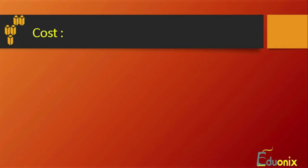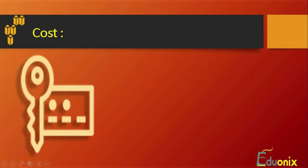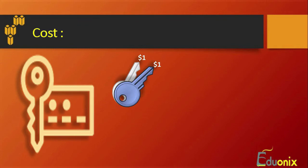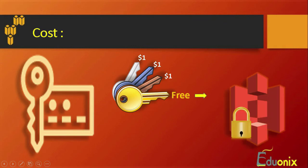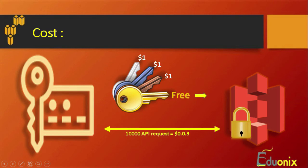Regarding the cost of KMS: each key you create costs one dollar. However, your first key is completely free. If you are using only one key, it is completely free. After that, 10,000 API requests are included, and beyond that you only pay three cents. This makes it very beneficial for free-tier users or those who are not frequent users of Amazon Web Services.